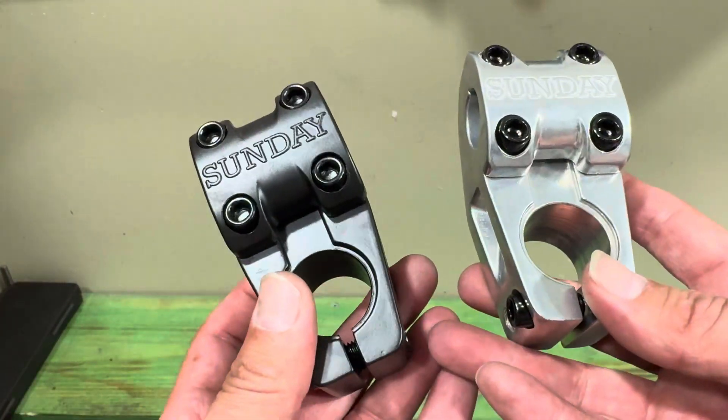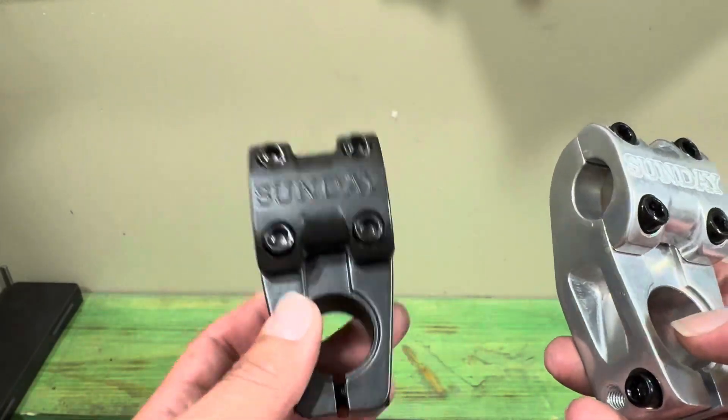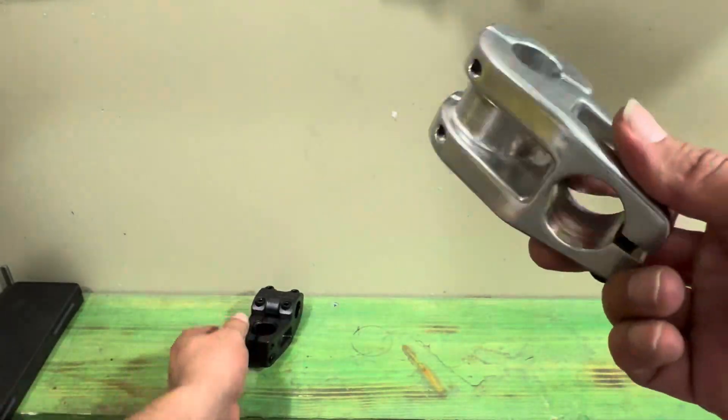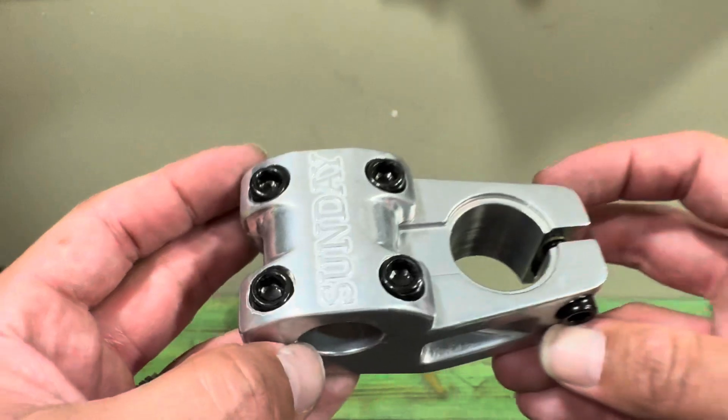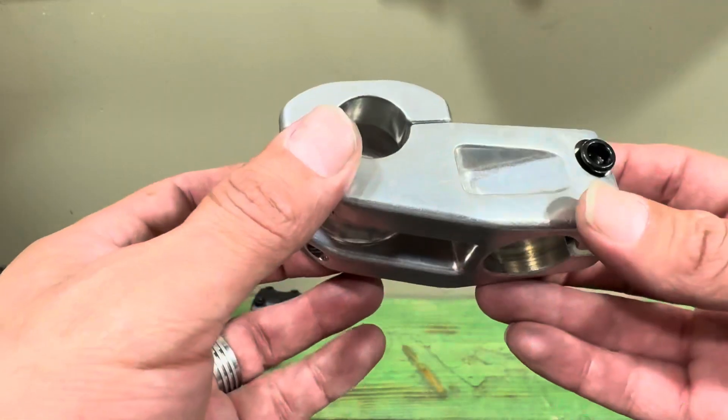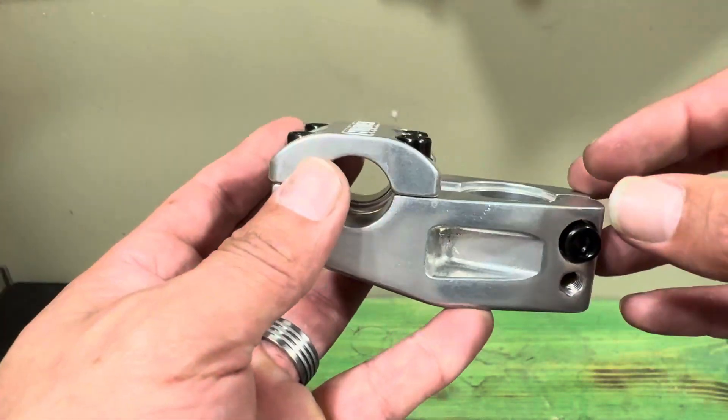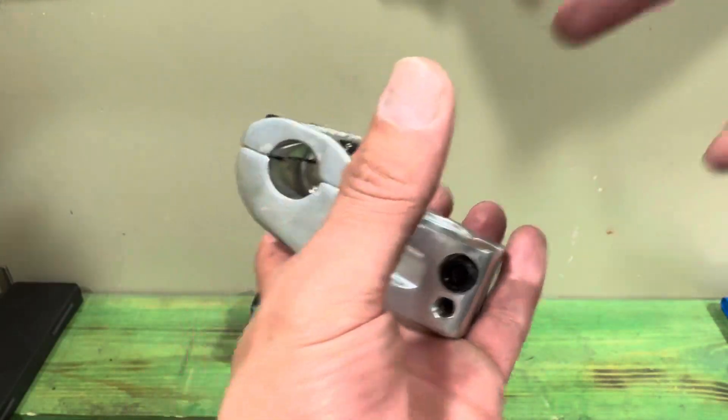These are the Sunday Free stems. They come in polish and they come in black. What I notice about this stem is that it's relatively light and the price is really good. Looking at it, this thing is drop forged aluminum, so they put a bunch of aluminum pieces into a compactor and they pretty much smash it together to make this mold.